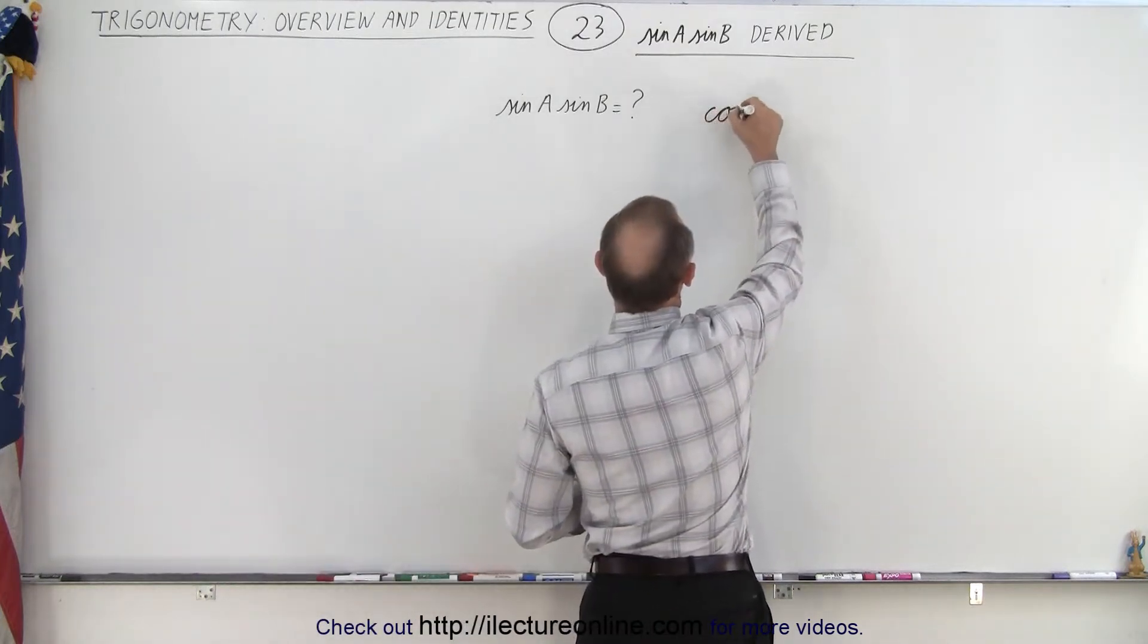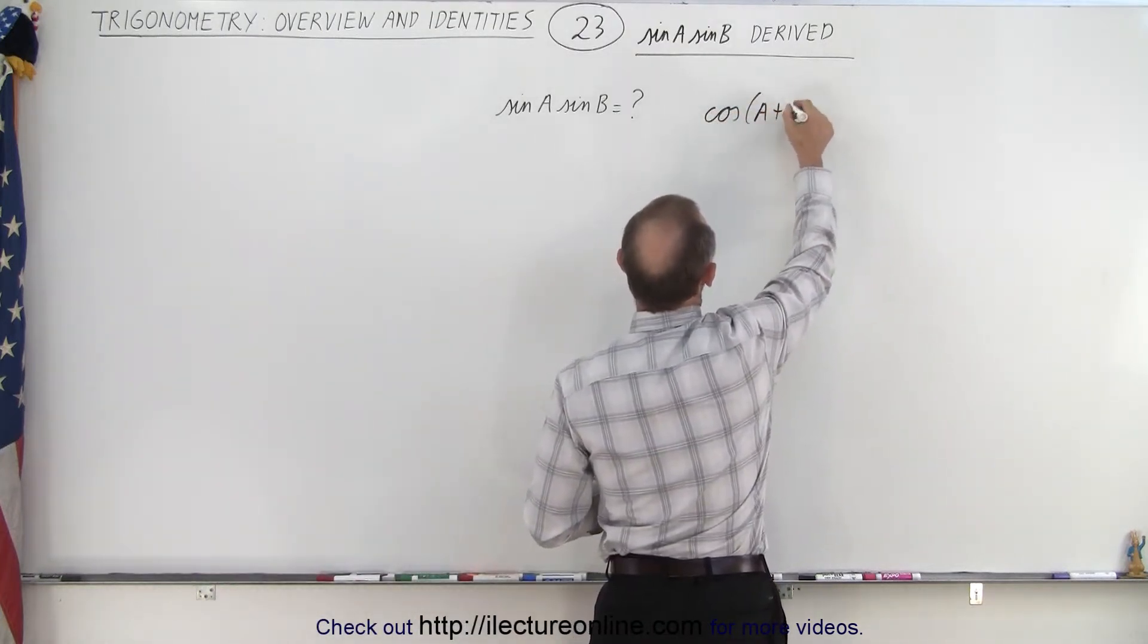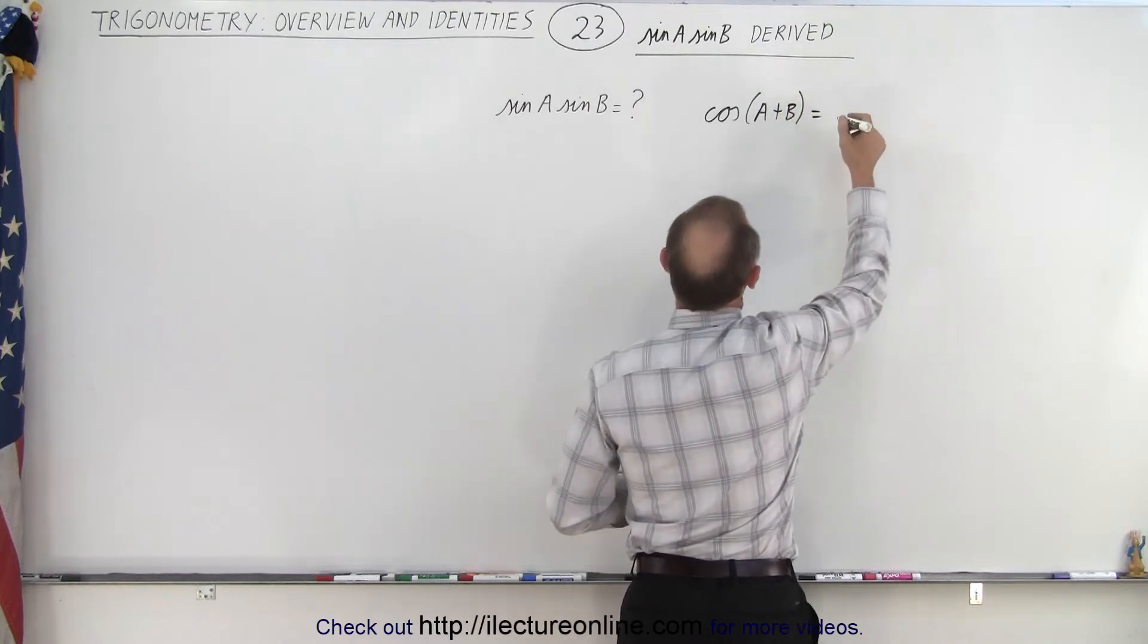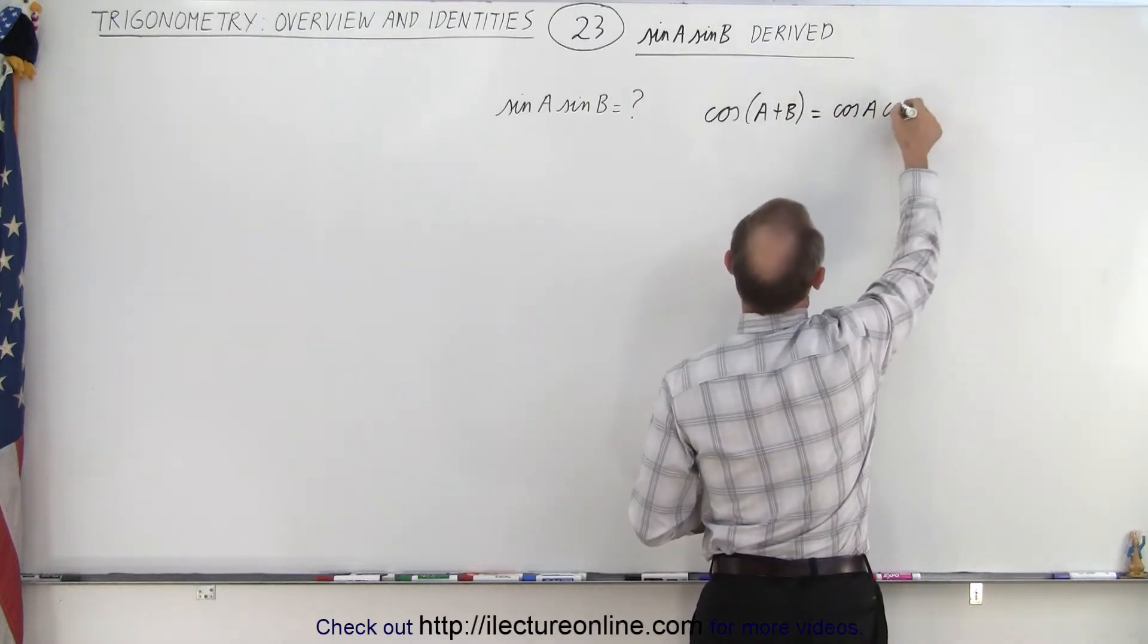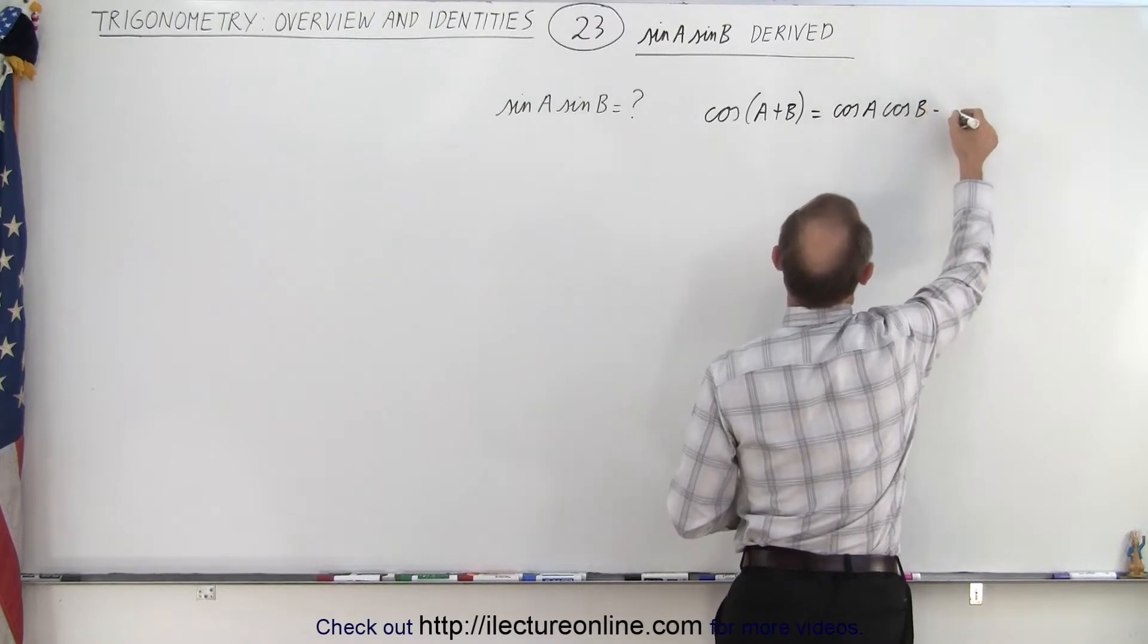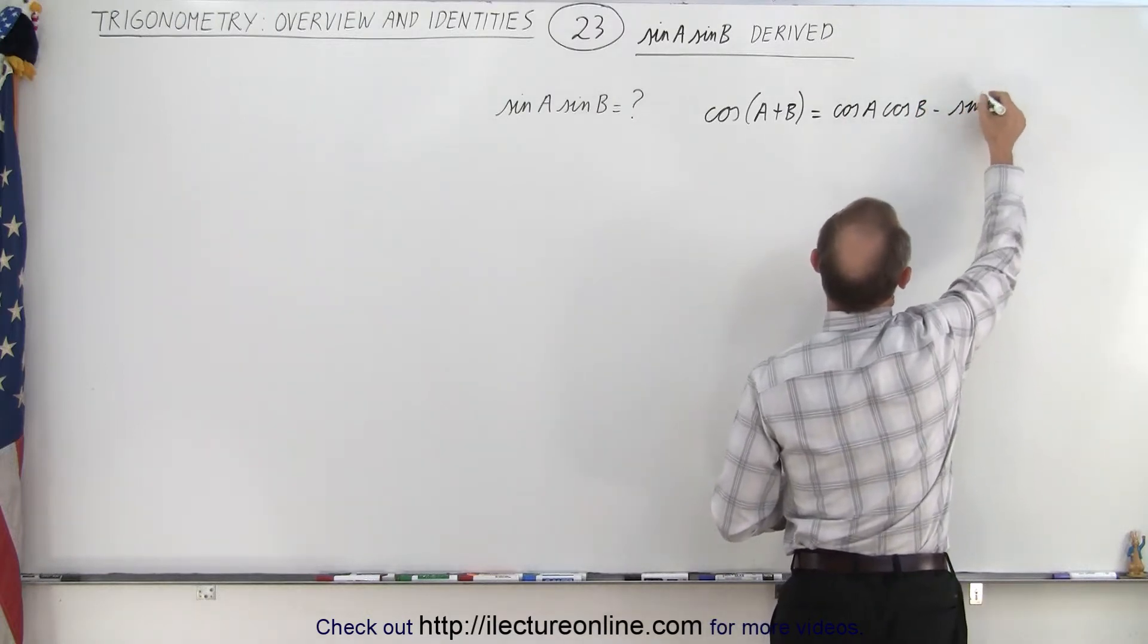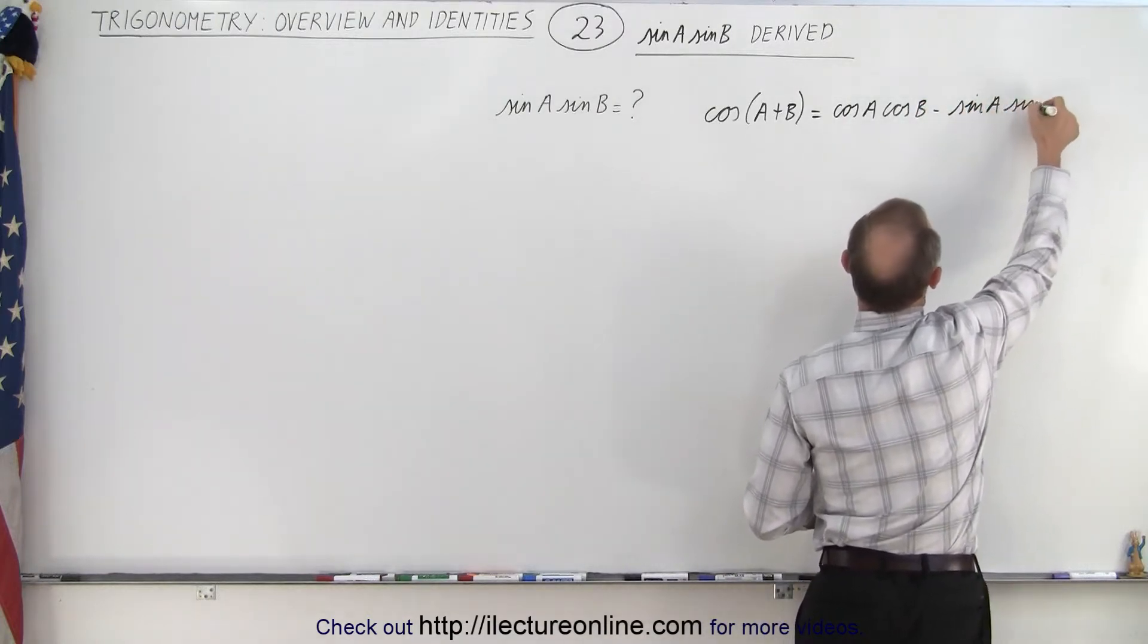when we have the cosine of a plus b, that will become equal to cosine of a times cosine of b minus sine of a times sine of b.